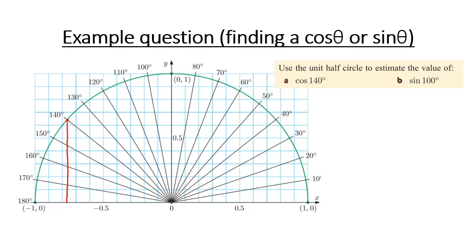...it's going to be just over negative 0.75, so we'll say approximately negative 0.77. And our sine value for 100, we find 100 and we go across to our vertical axis which is our y-axis, and we could say that this is approximately 0.98 because it's pretty close to 1, but it's just underneath.